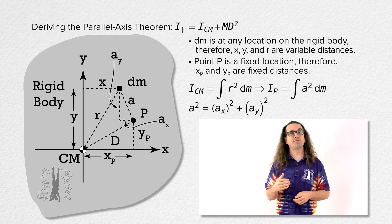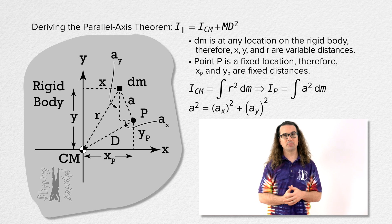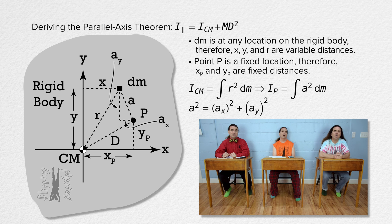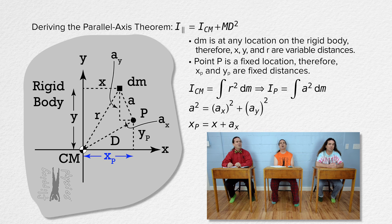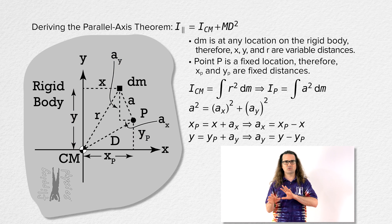Please solve for A in the x direction and A in the y direction in terms of x, x sub p, y, and y sub p. If you look at the x direction, the distance x sub p is the same as the distance x plus the distance A in the x direction. So A in the x direction equals x sub p minus x. And in the y direction, y equals y sub p plus A in the y direction, which means A in the y direction equals y minus y sub p. That's going to take a bit to show how that helps, but trust that it does.